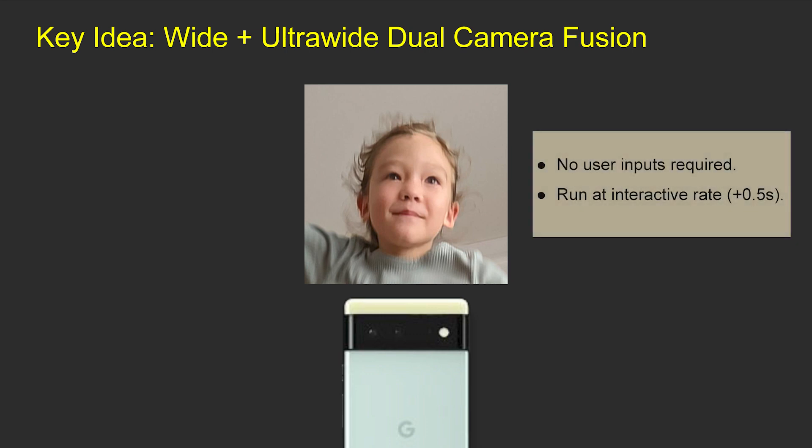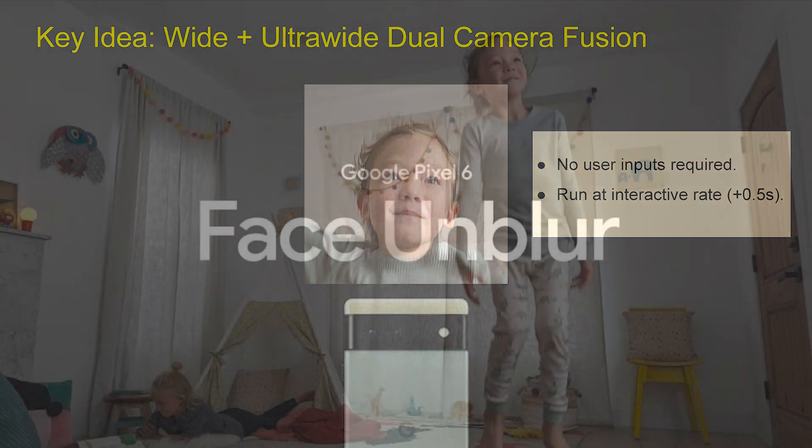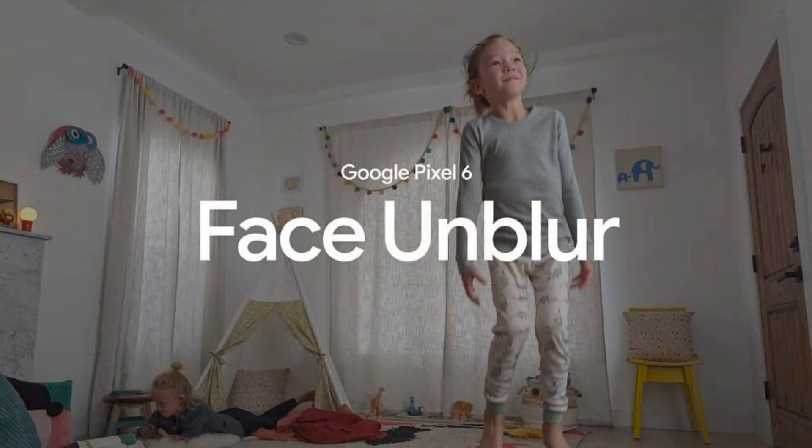Our method only takes 0.5 seconds on mobile phones, allowing users to see the de-blurred result right after pressing the shutter button. Our system has been shipped on Google Pixel 6 in 2021 as Face Unblur.